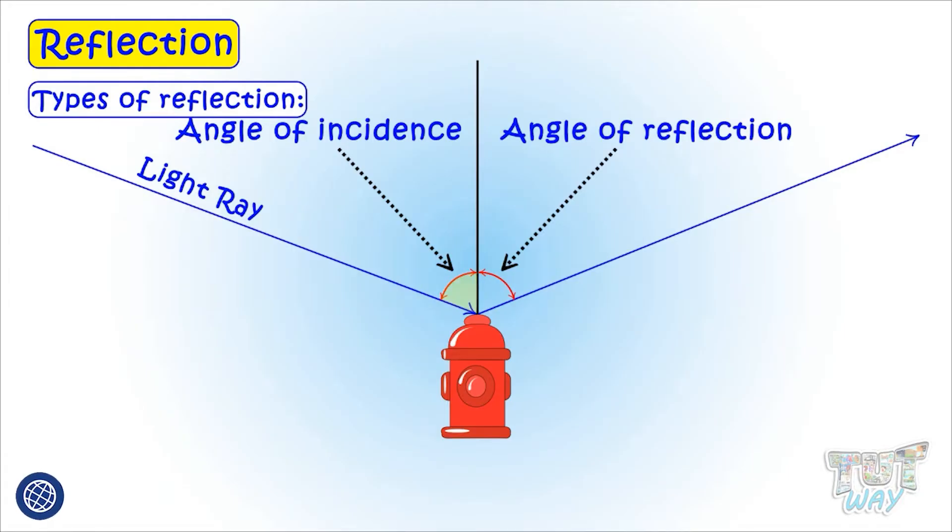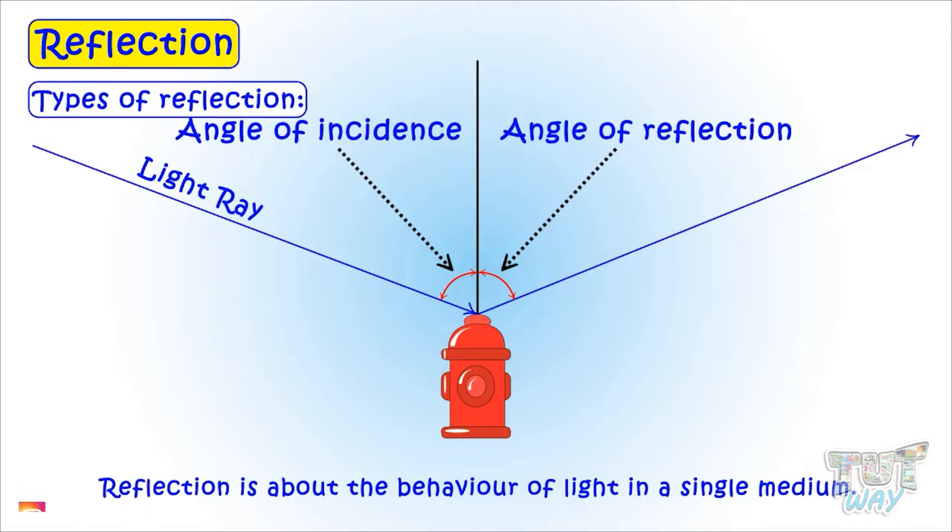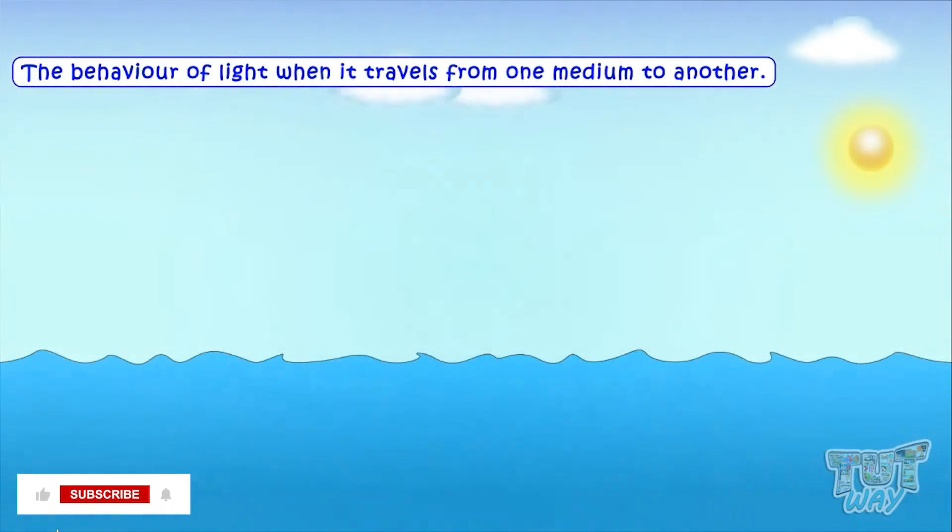Whatever will be the angle of incident ray, equal will be the angle of reflected ray. So reflection is about the behavior of light in a single medium. Now we will learn about the behavior of light when it travels from one medium to another medium.